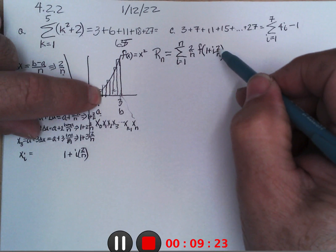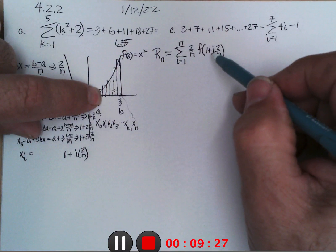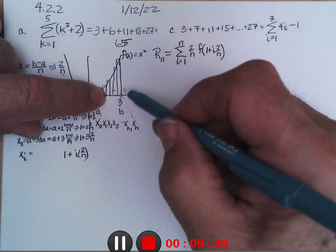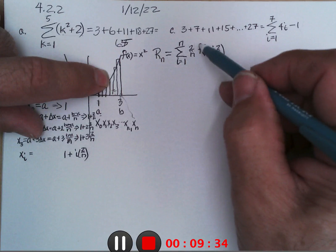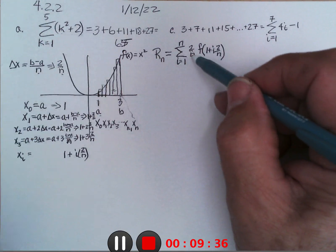So this would be 1 plus 1 width, which would take me to here, not to 1 but to 1 width over. And then when i is 2 it would take me to that spot, and when i is 3 it would take me to that spot, figure out the height f of that times the width.